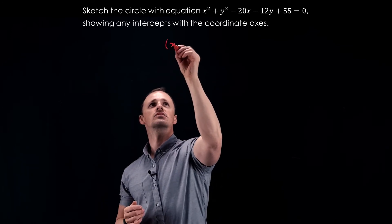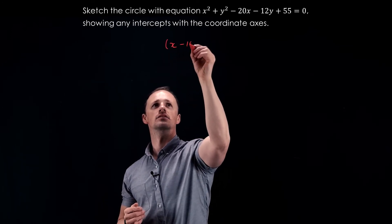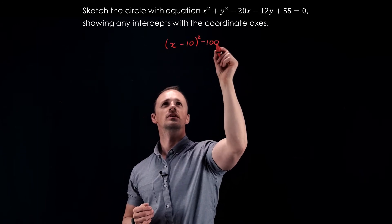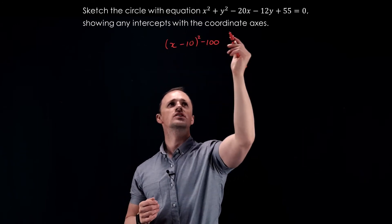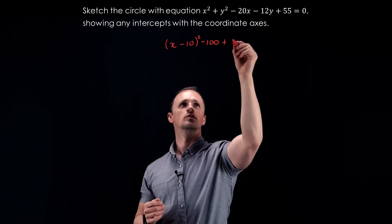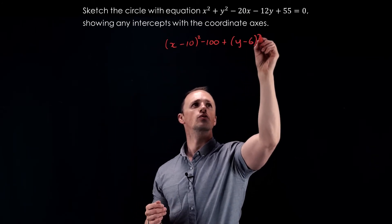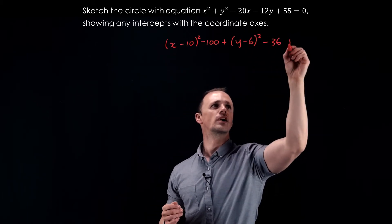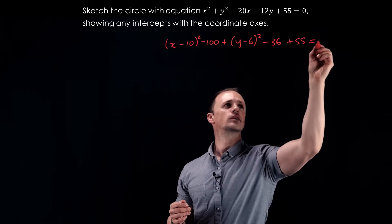We're going to get x minus 10 all squared minus 100. For the y part, we've got y squared minus 12y. That's going to become y minus 6 all squared minus 36. We've got a plus 55, and that equals 0.